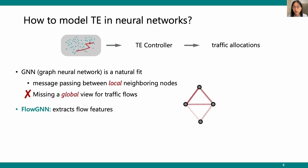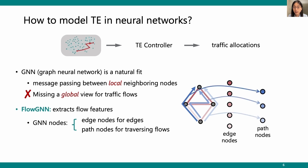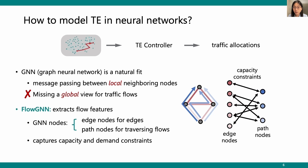To solve this, we design Flow GNN to extract flow features, which are compact vectors capturing a learned representation of flows. We create two types of GNN nodes: edge nodes for edges, and path nodes for the paths that flows traverse. Message passing between GNN nodes captures demand and capacity constraints. Edge nodes send capacity usage information to path nodes, and path nodes send back flow allocation information to edge nodes. There is also message passing among path nodes from the same source and destination to mimic demand constraints.